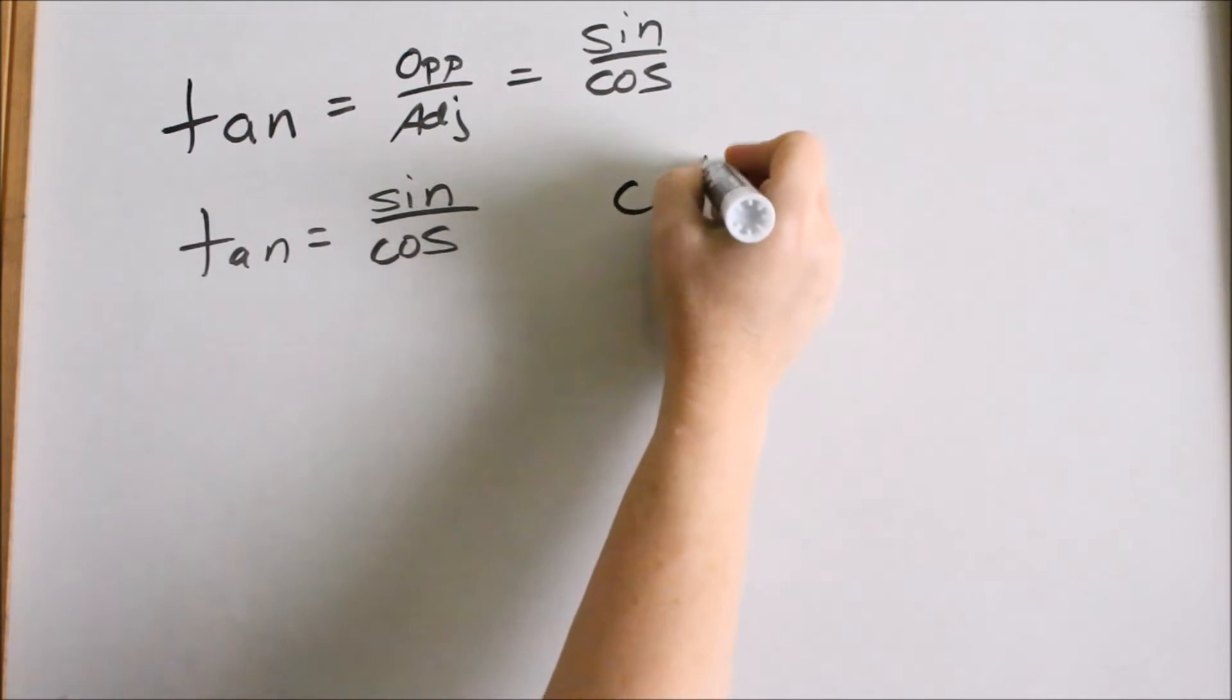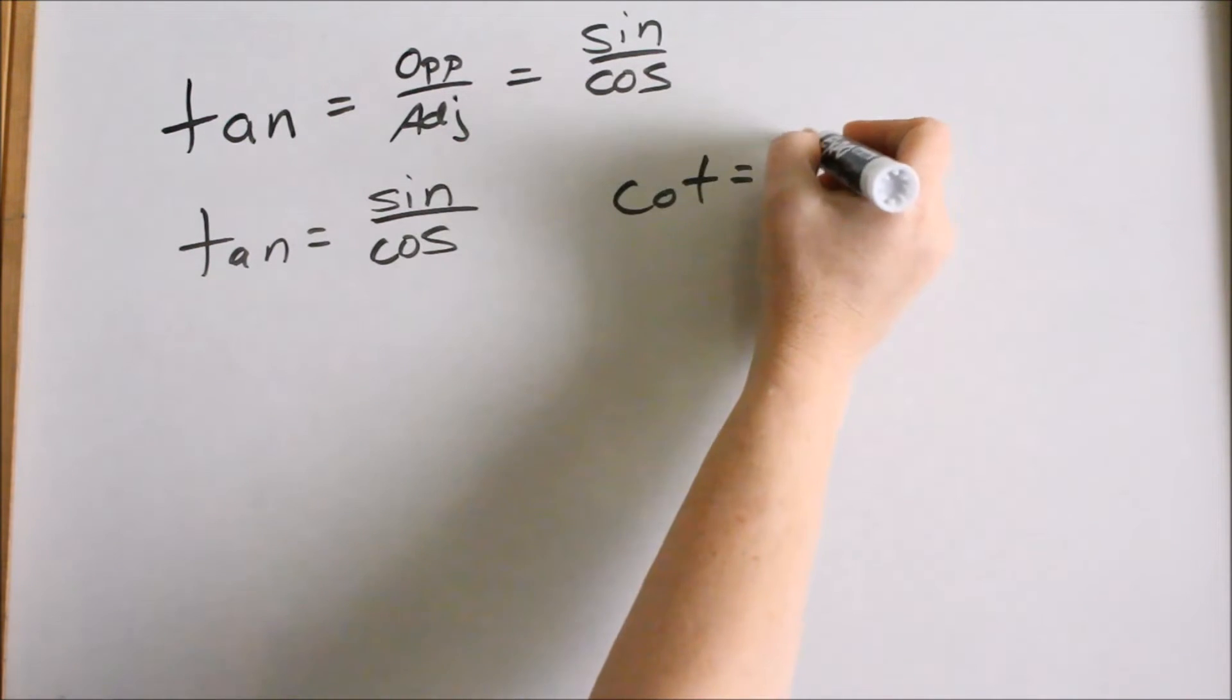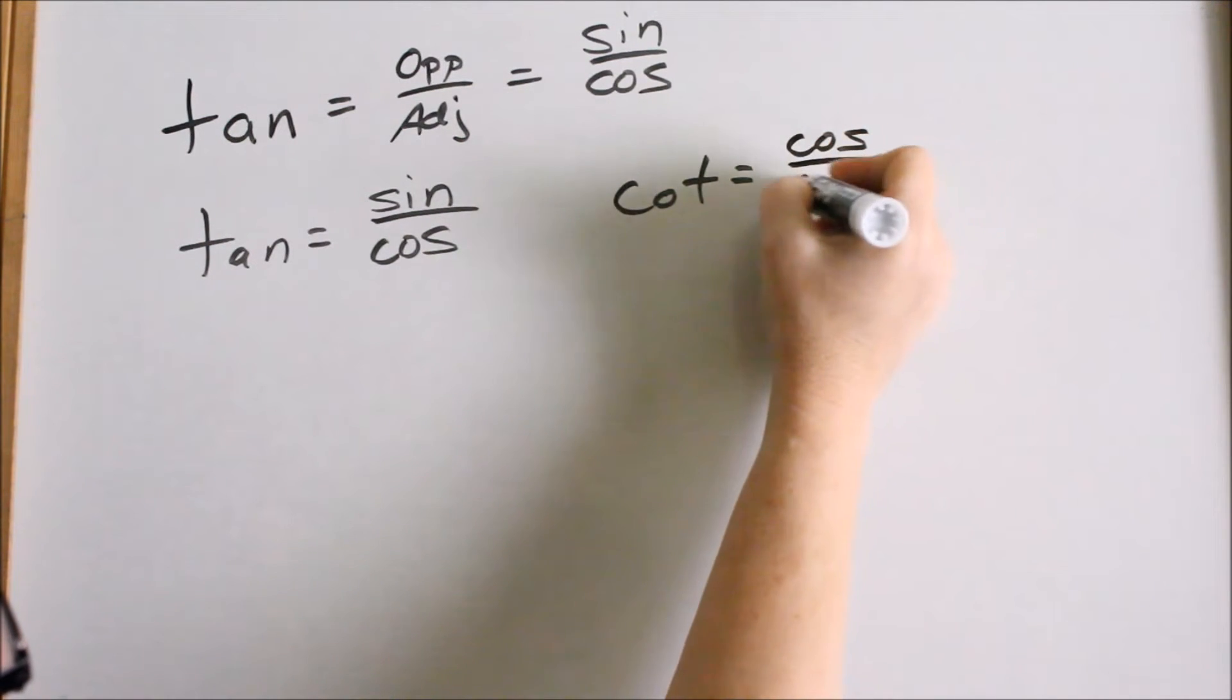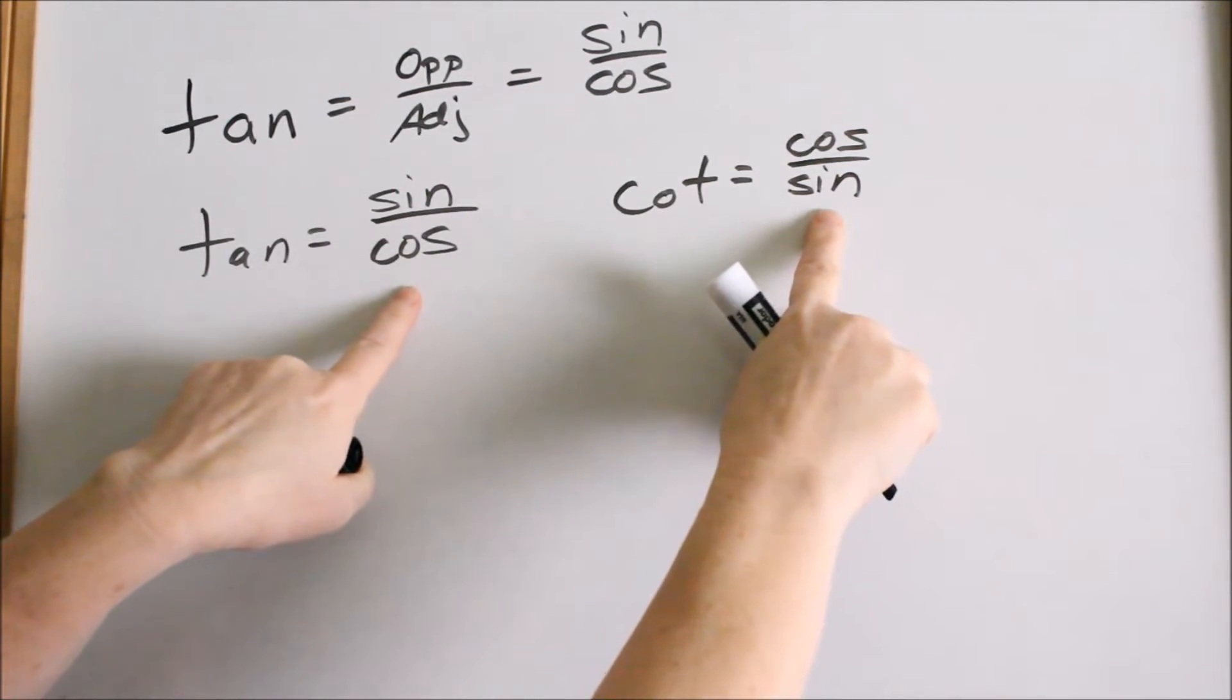And since cotangent is the reciprocal of tangent, that means that cotangent must equal cosine over sine. These are reciprocals.